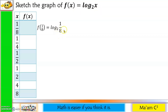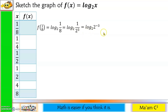I'll express 8 as 2 cubed, and then bring up this denominator, which makes the exponent negative. By the property of logarithm, if your x equals your base b, then the answer is the exponent of x. So this is equal to negative 3.